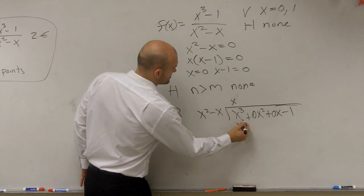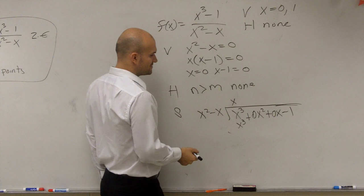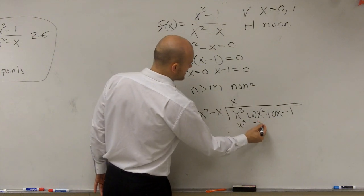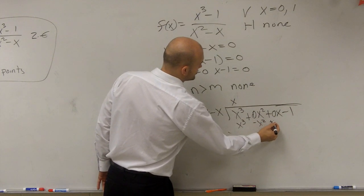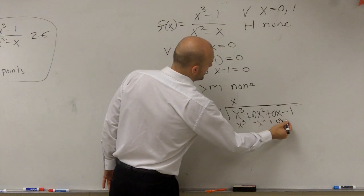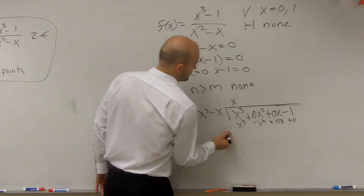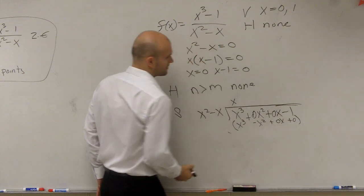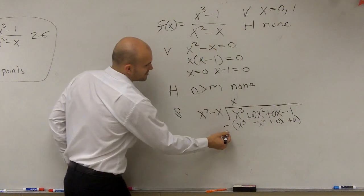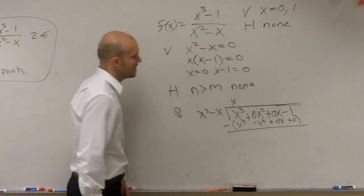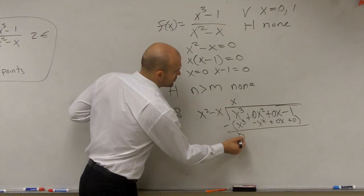Multiply, you get x cubed. x times negative x gives you negative x squared. And then we can do plus 0x and then plus 0, because we don't have terms for there. So we subtract the top from the bottom.